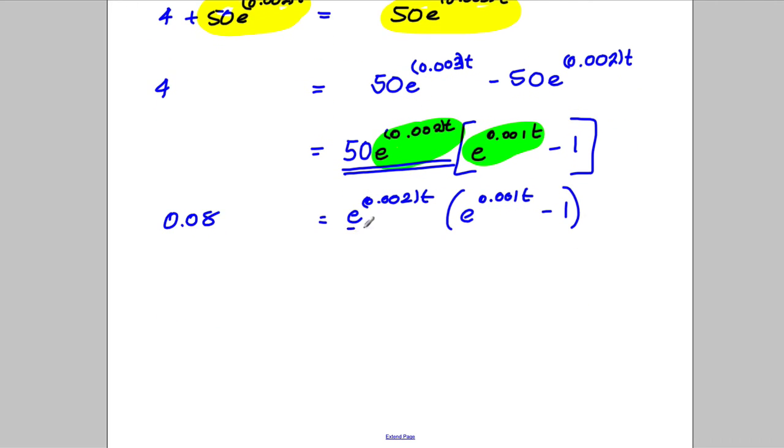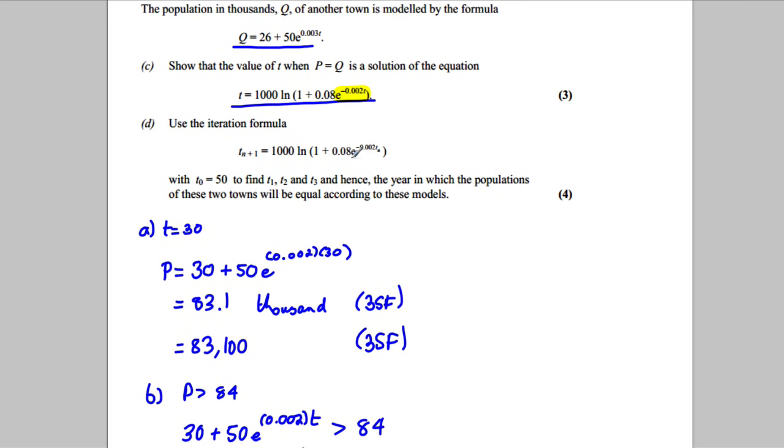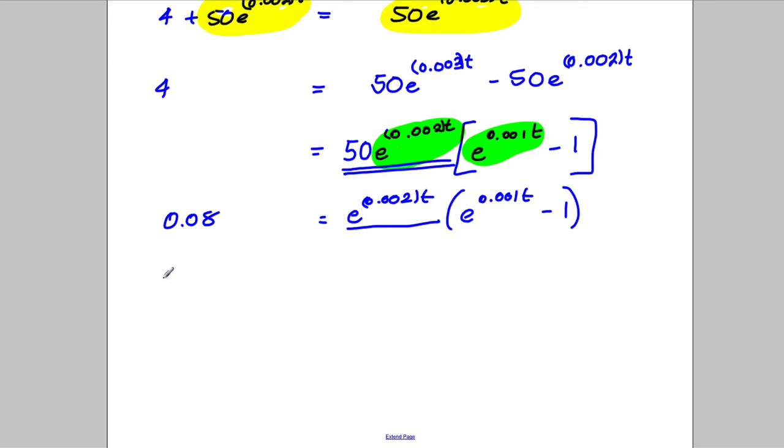And now I can actually divide both sides by this. Now the reason I'm doing that is I've seen in the answer there's an e to the power of negative 0.002 T. So dividing both sides by that, I get 0.08 e to the power of negative 0.002 T. Negative, because it's 1 over, is equal to e to the 0.001 T take away 1. Add 1 to both sides, so e to the 0.001 T is going to equal 1 add 0.08 e to the power of negative 0.002 T.